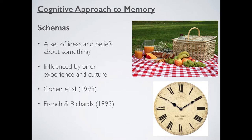Coincidentally, in the same year, another group of psychologists — French and Richards — also did a nice little experiment. They asked people to look at a clock, then to turn away from it and draw it. What they did is quite interesting: they used XII for 12, III for 3, but for 4, they drew IV. There's hardly any clock in the world that has IV for 4 — they normally have IIII. That's just how clockmakers have always done it. But because the participants have a schema about Roman numerals, they just assumed the clock would fit their schema, so they drew IV instead of IIII.